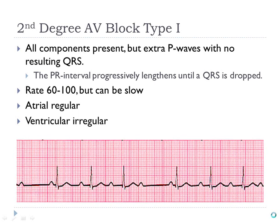There are two types of second degree blocks. This is second degree type 1 — also called Wenckebach. The rhythm looks sinus but sometimes you may see extra P waves. What's happening is that the PR interval gets longer and longer with each beat. We start with a normal PR interval, it gets longer, even longer, and then — done — it never gets to the AV node, so there is no QRS. We're missing a QRS.